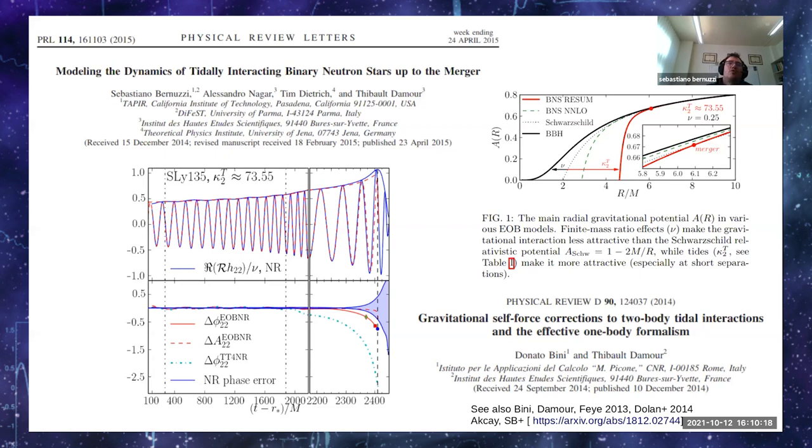In particular, this paper together with Thibault was the very first work that proposed a model able to describe the gravitational wave from very low frequency up to merger and that was validated against numerical relativity simulations. Here the particular choice for the tidal radial potential is based on work by Donato Bini and Thibault that computed linear in mass ratio tidal invariants up to 7.5 PN, and they proposed a specific global resummation of these gravitational self-force results. The gravitational self-force tidal potential is shown in figure one there on the top right.